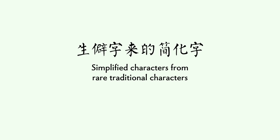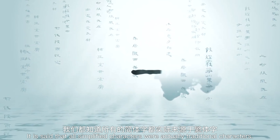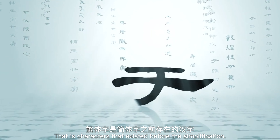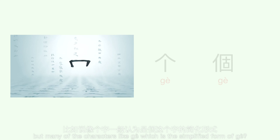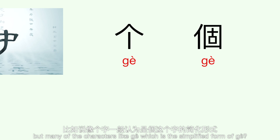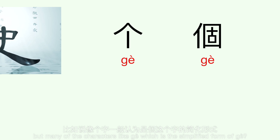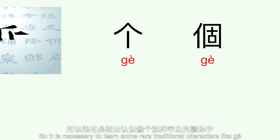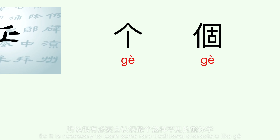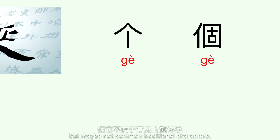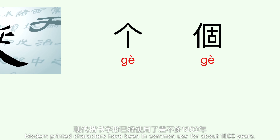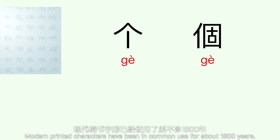Simplified characters from rare traditional characters: it is said that all simplified characters were actually traditional characters, that is, characters that existed before the simplification. This is not entirely true, but many characters, like Gu, which is the simplified form of Gu, can be found in the older dictionaries. So it is necessary to learn some rare traditional characters like Gu which were traditional but maybe not common traditional characters.